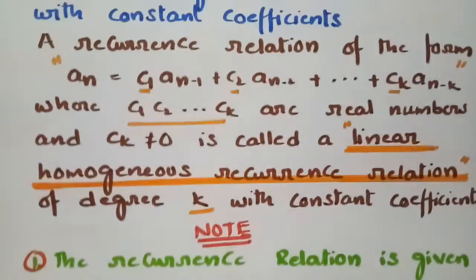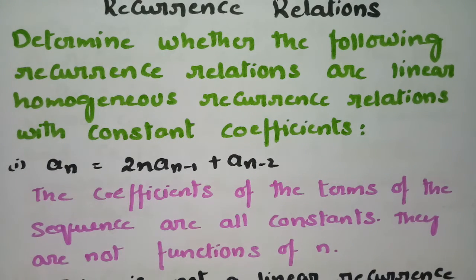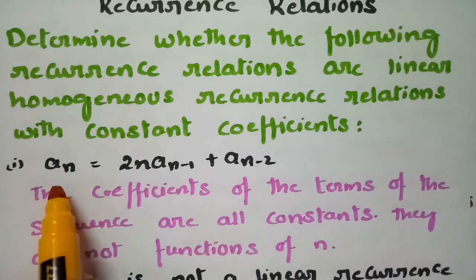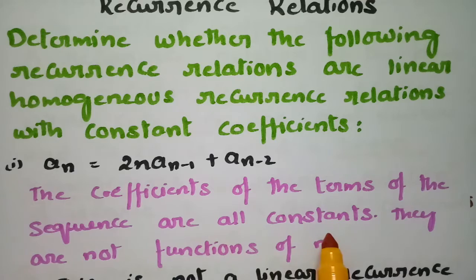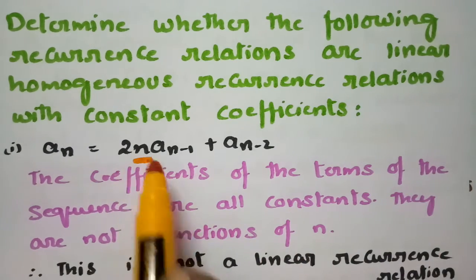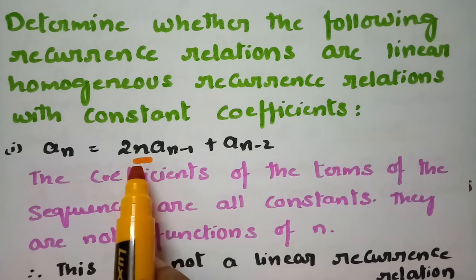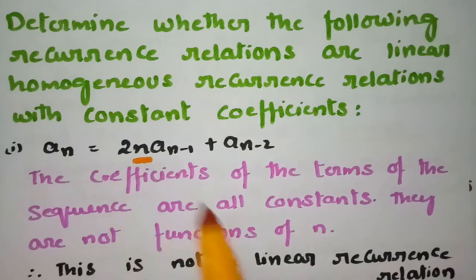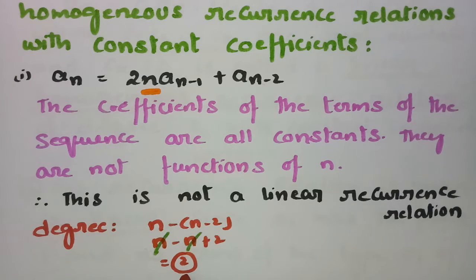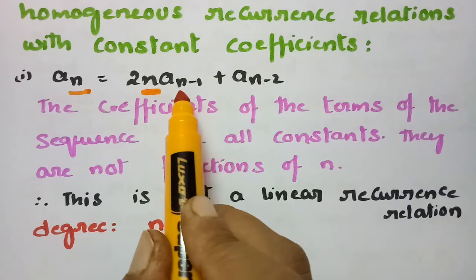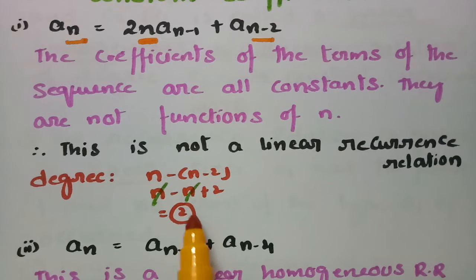We now determine whether the following recurrence relations are linear homogeneous recurrence relations with constant coefficients and also find the degree. The first example is aₙ = 2n·aₙ₋₁ + aₙ₋₂. Here, since the coefficient 2n is a function of n and not a constant, this is not a linear homogeneous recurrence relation. The degree is the difference between the greatest subscript n and the lowest subscript n−2, so the degree is 2.